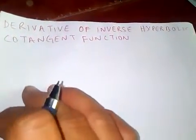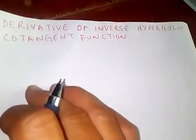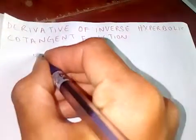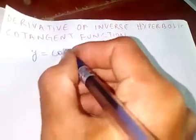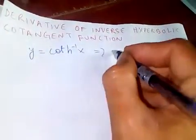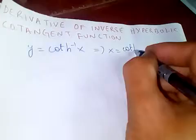Thanks for watching my video. Today I'm going to discuss the derivative of inverse hyperbolic cotangent function. Let's say y is equal to coth hyperbolic inverse of x, so if you find out x, x is equal to coth hyperbolic of y.